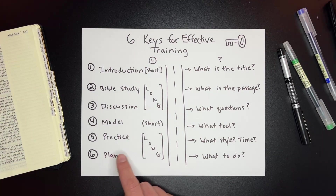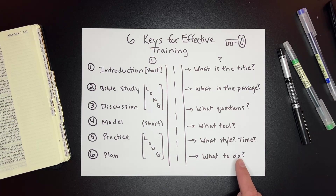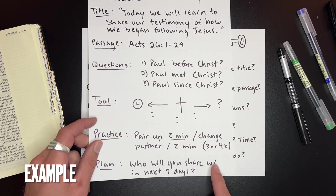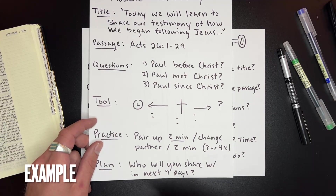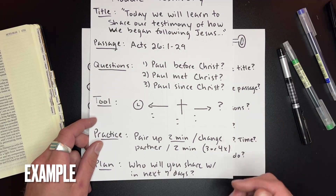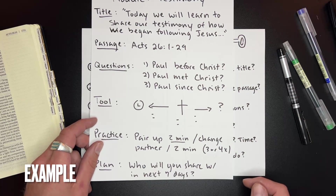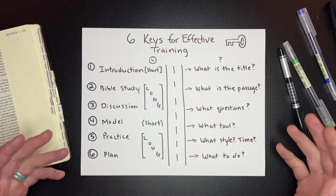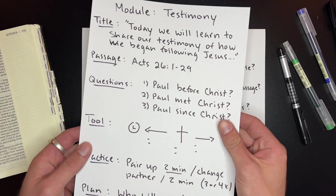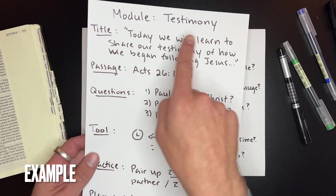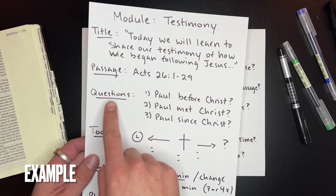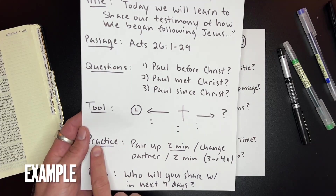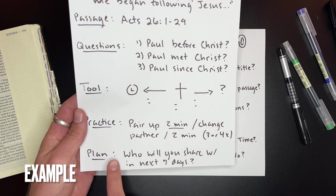The final thing is to make a plan. What is the goal — what are you wanting them to do? For the testimony module, I would ask at the end: 'Who will you share with in the next seven days? Let's make a plan. Is this somebody on your Oikos map? Is this somebody at your workplace? Is this somebody in your neighborhood?' With every tool we roll out, it's helpful to have a one-page sheet: tool title, Bible study passage, discussion questions, the tool illustration, how much time to practice, and the action plan goal.